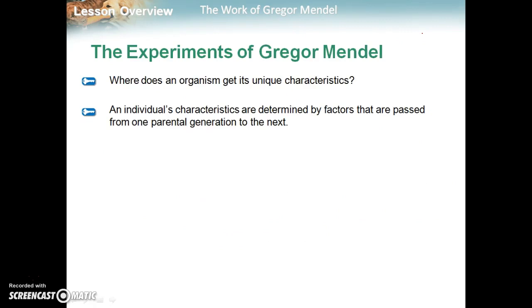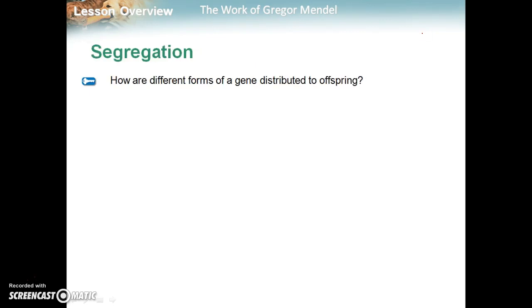So individuals get their characteristics, which are determined by factors, which we know as genes, that are passed from one parental generation to the next generation. The next question is, how do we get different forms of a gene distributed to our offspring?